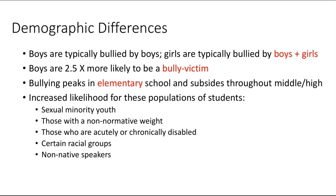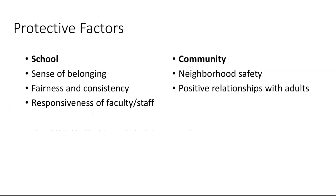If we try to unpack the differences between these groups: boys are typically bullied by boys; girls are typically bullied by boys and girls. Boys are 2.5 times more likely to be both a bully and a victim. For the most part, bullying peaks in elementary and then wanes off through middle school and high school. We also know there is increased likelihood of bullying behaviors in different populations: sexual minority youth, individuals with non-normative weight, students who are acutely or chronically disabled, different racial groups, and non-native speakers are also a bit more at risk.